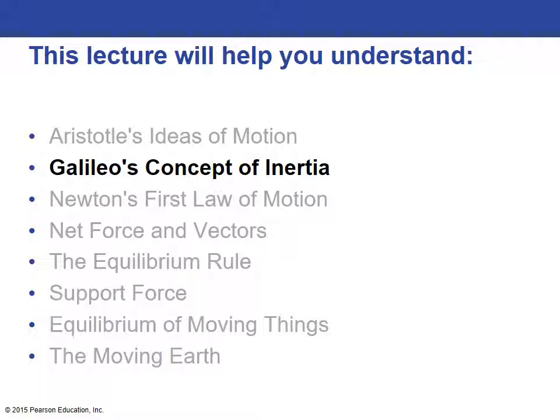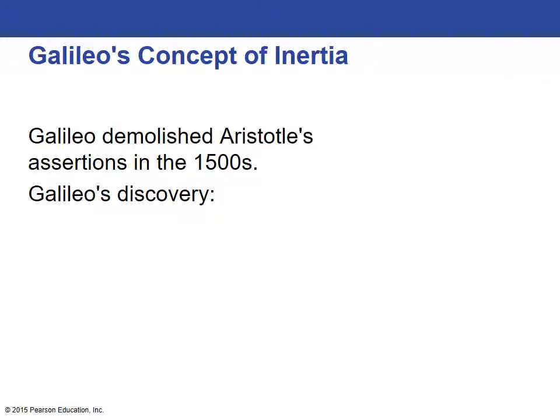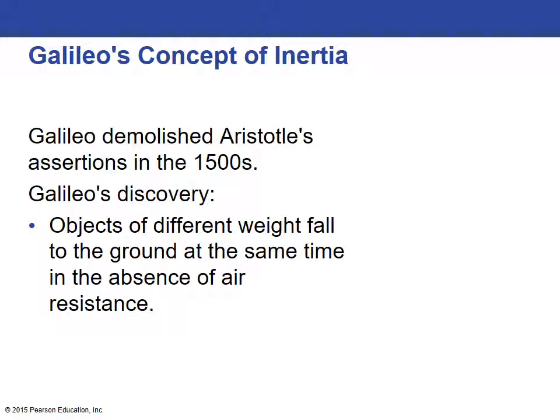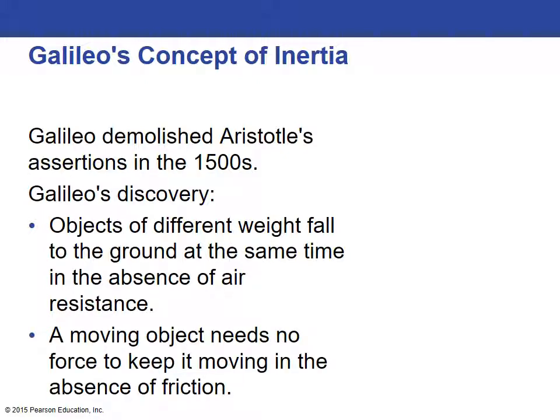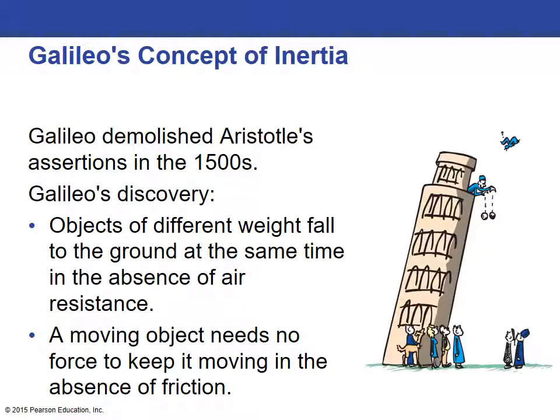Galileo came along hundreds and hundreds of years after Aristotle, and he had a different concept of how things move. Galileo's famous experiment in the 1500s demonstrated that objects of different weights will fall to the ground at the same time. He also made the observation that something that is moving will continue to move unless there's an action on it to make it stop.